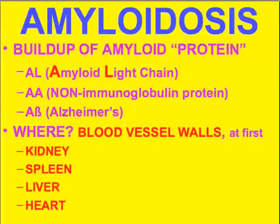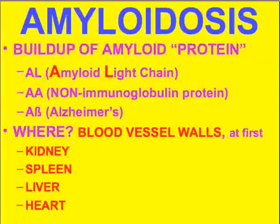The most common type is called AL — amyloid light chain — which you can think of as a buildup of immune proteins, for example in multiple myeloma or chronic granulomatous diseases. That's why these two conditions show a very high association with amyloidosis. Another type is AA amyloid. The amyloid associated with Alzheimer's disease is called beta amyloid, which is somewhat different but still shares certain immune features.